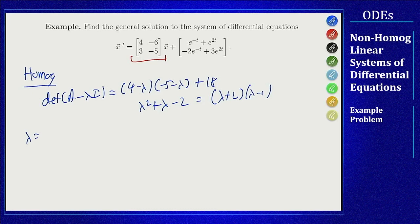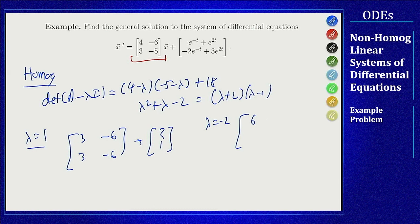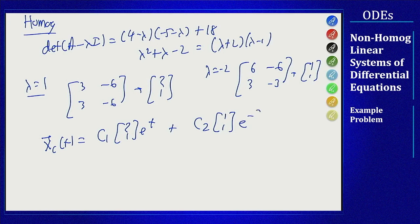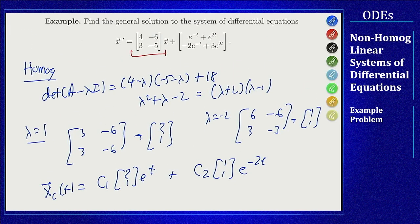For λ = 1, subtracting one off the diagonal gives [3, -6; 3, -6], so an eigenvector is [2, 1]. For λ = -2, we get [6, -6; 3, -3], so an eigenvector is [1, 1]. The general homogeneous solution is x_c(t) = c₁[2, 1]e^t + c₂[1, 1]e^(-2t).